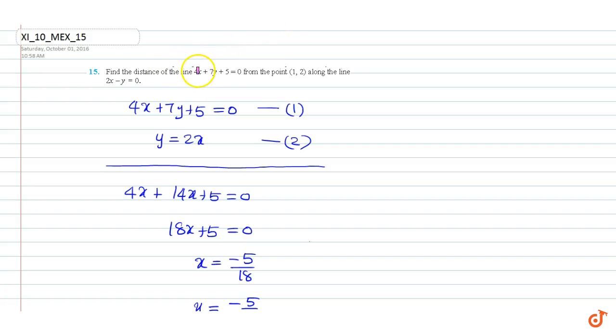In this question, we have to find the distance of the line 4x plus 7y plus 5 equals 0 from the point (1, 2) along the line 2x minus y equals 0.